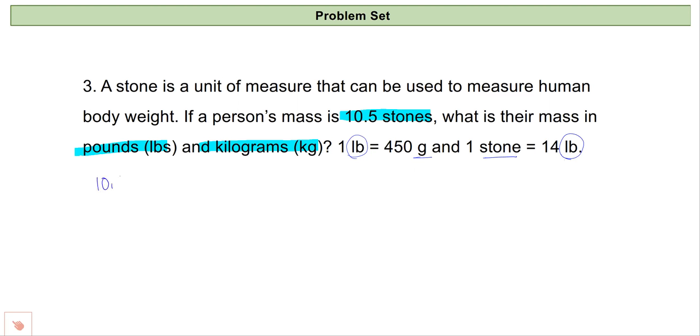So if my starting point is 10.5 stones and I have a conversion, I'm going to end up in units of pounds. So I need my pounds to be on the top because those are the units I want, and my stones on the bottom. So that means when comparing these two conversion factors, I'm going to go for the conversion factor that has stones and pounds in it. And this tells me that one stone is equal to 14 pounds.